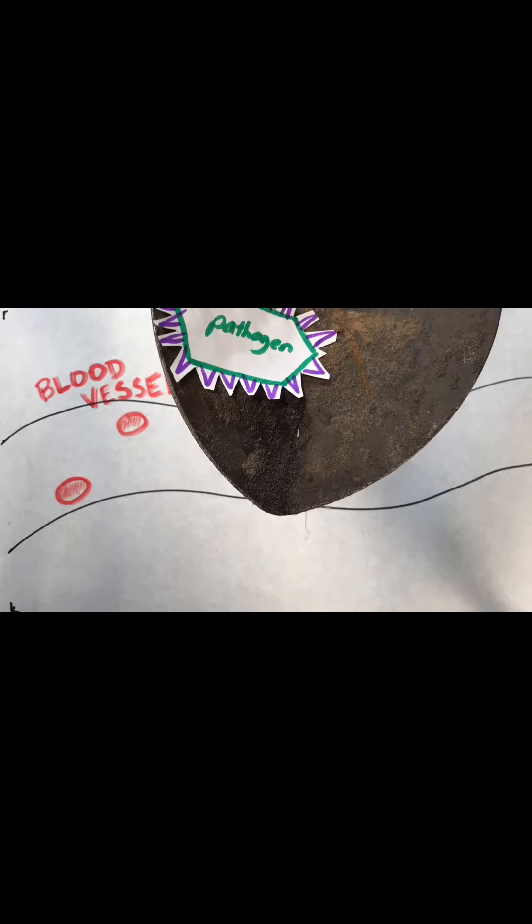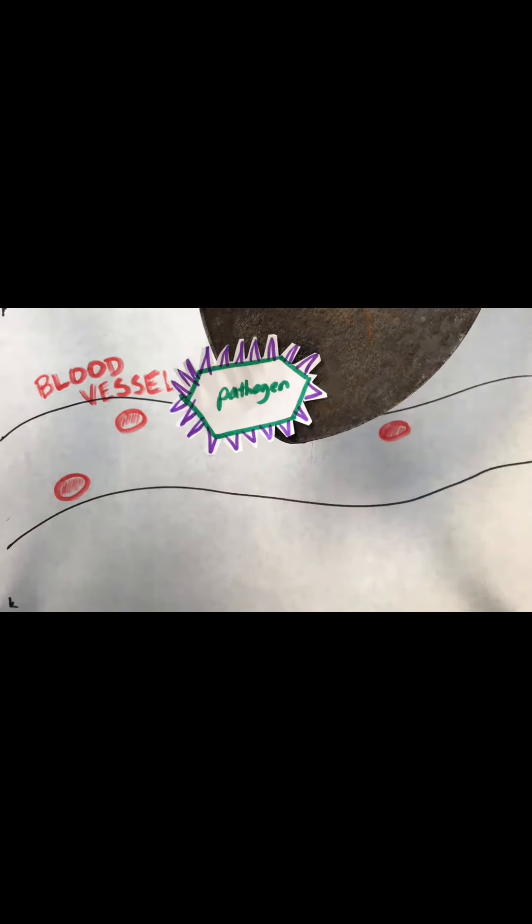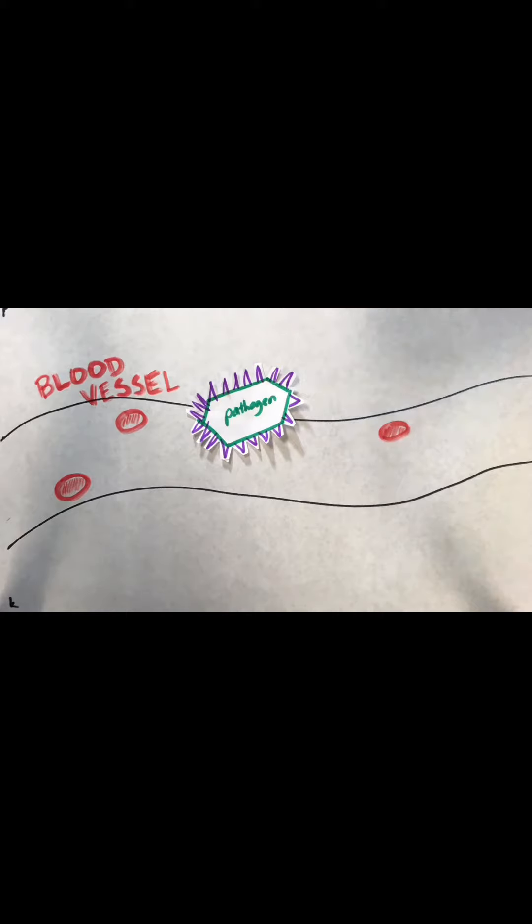In the innate immune response, the pathogen is introduced inside the body, and various immune cells including the macrophage, which is the first one to come in and release cytokines.